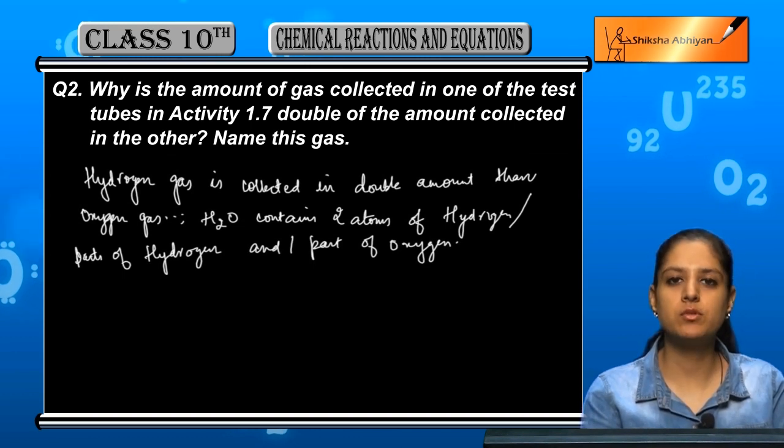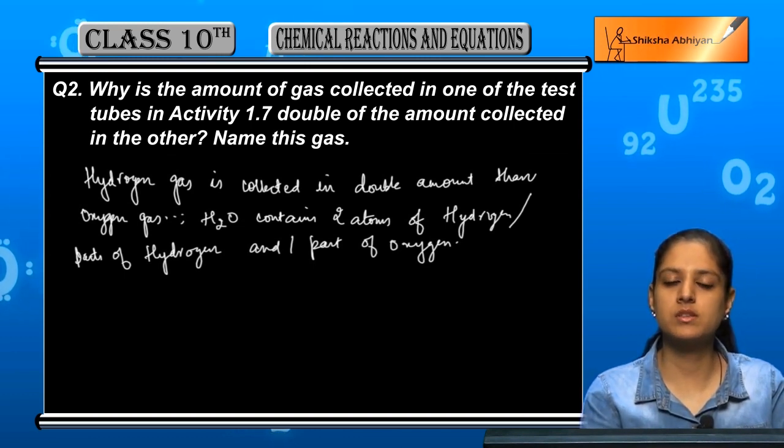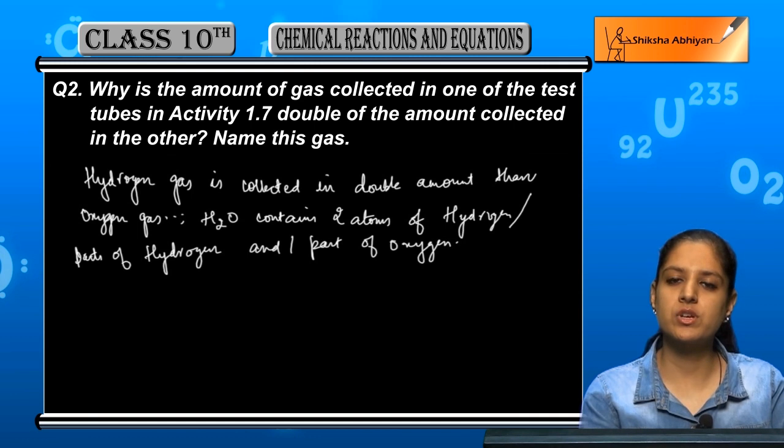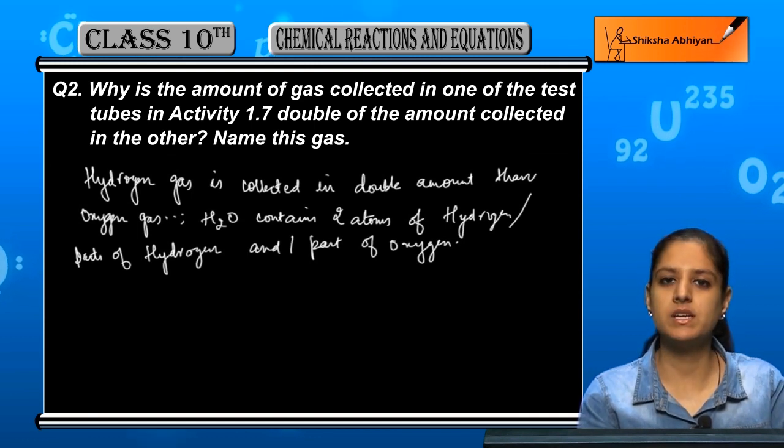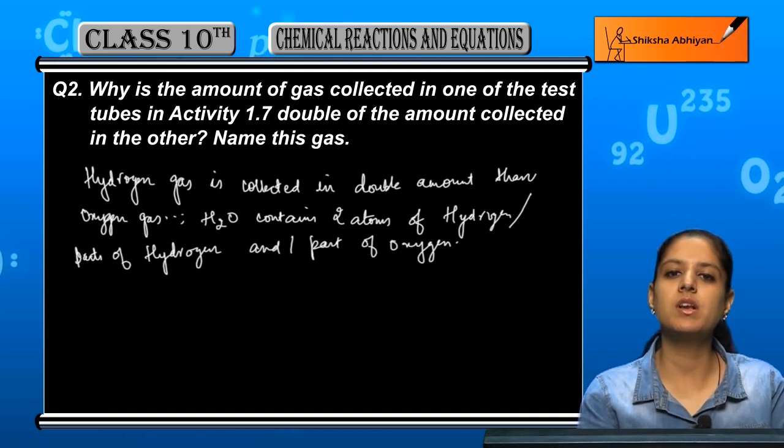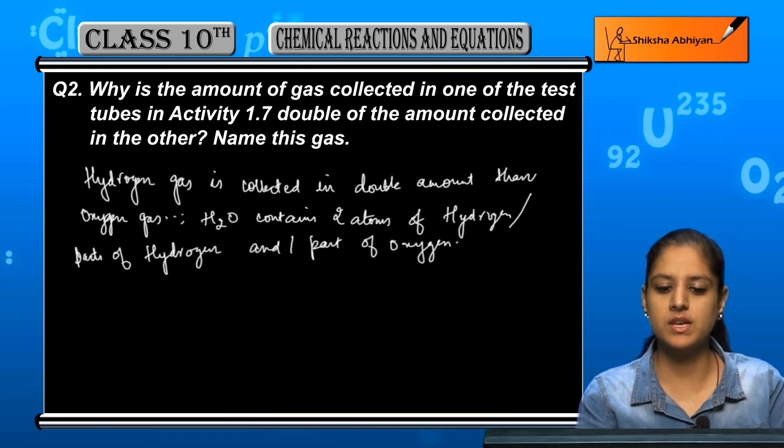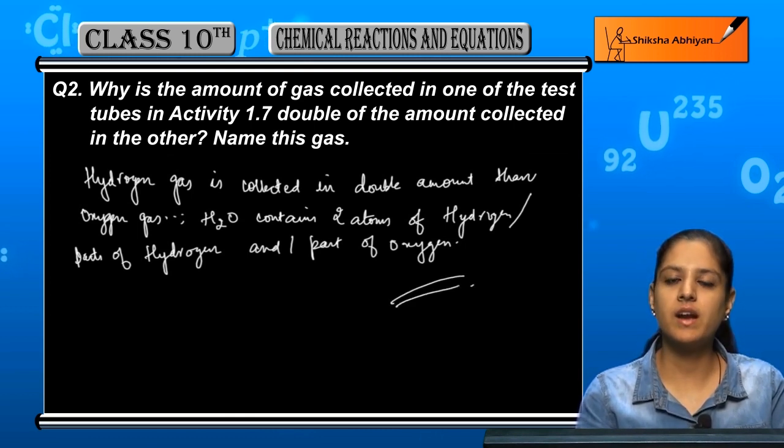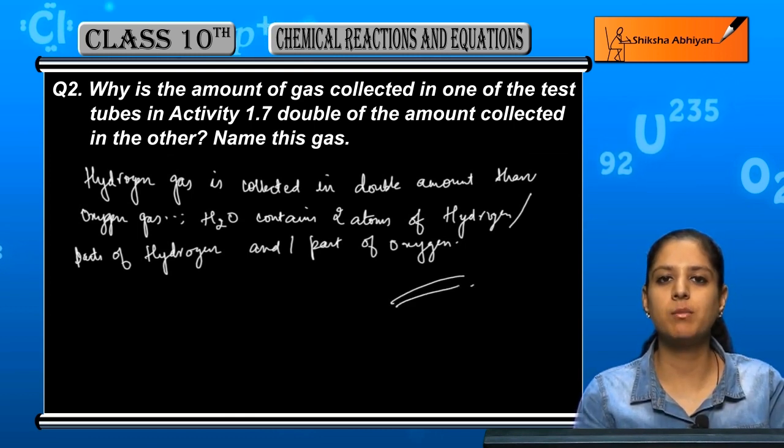So the proportion is double, and the amount of hydrogen it collects is double. This is the reason, and hydrogen is the gas which collects in double amounts.